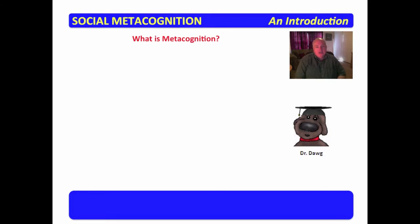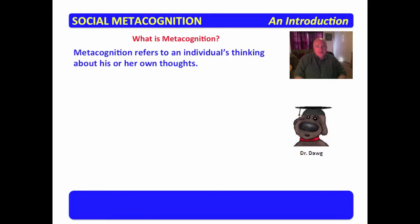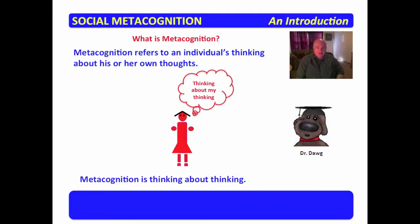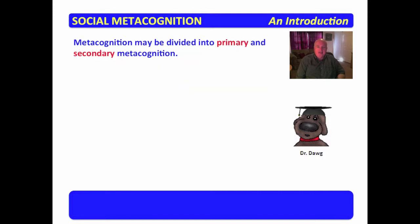You may ask yourself what is metacognition? Metacognition refers to an individual's thinking about his or her own thoughts. Here's an example: I'm thinking about my thinking. So metacognition is simply thinking about thinking.